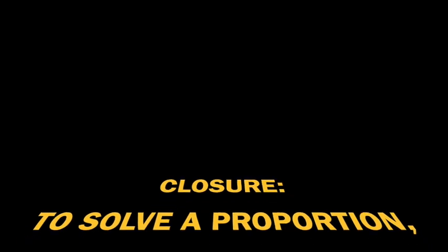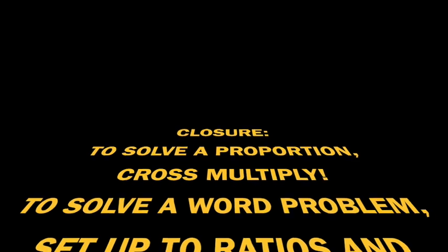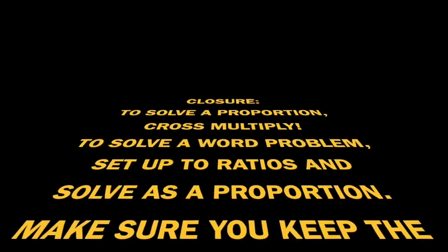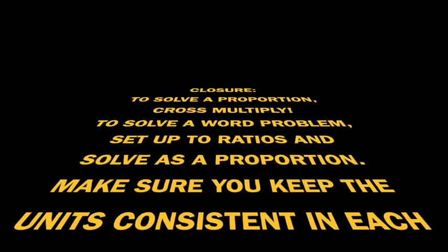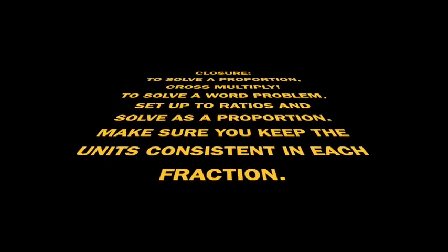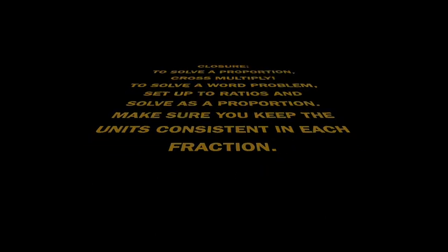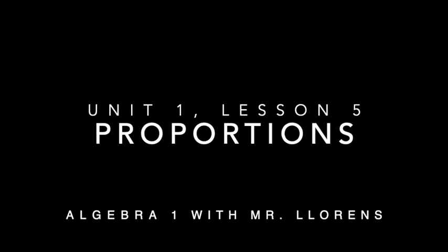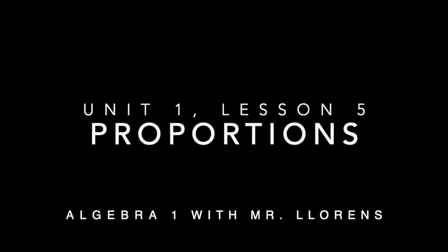To summarize, when you are solving a proportion, you do it by cross multiplying. If you're given a word problem, you want to set up a couple of ratios and solve them as a proportion. When you're setting up these ratios, make sure that you keep your units consistent. Whatever unit goes on the top in the first ratio should go on the top in both ratios. As always, if you came away with anything else, make sure you write that down now. Otherwise, we'll see you next time.